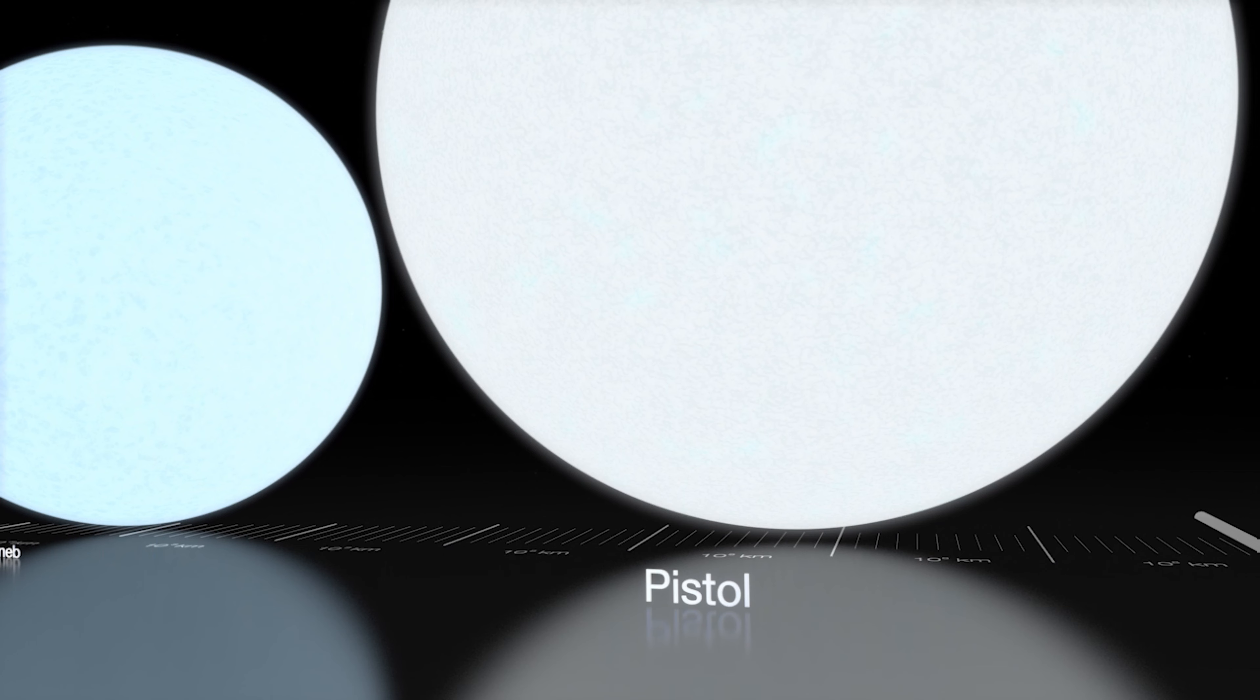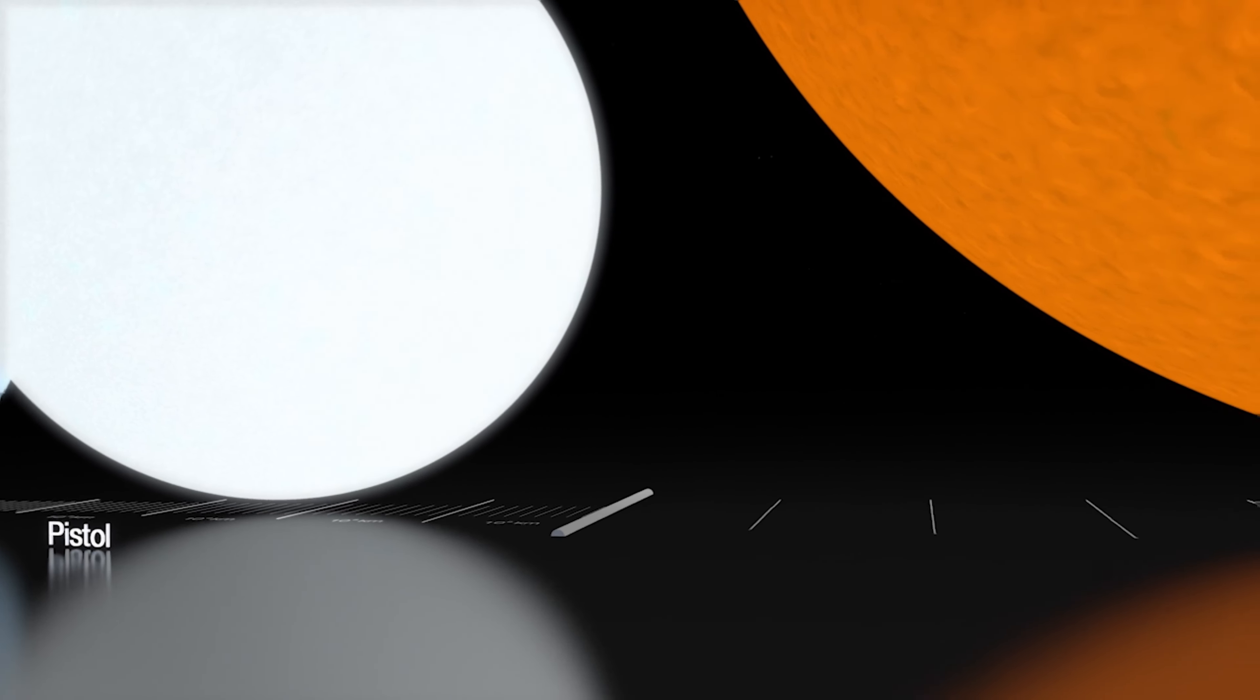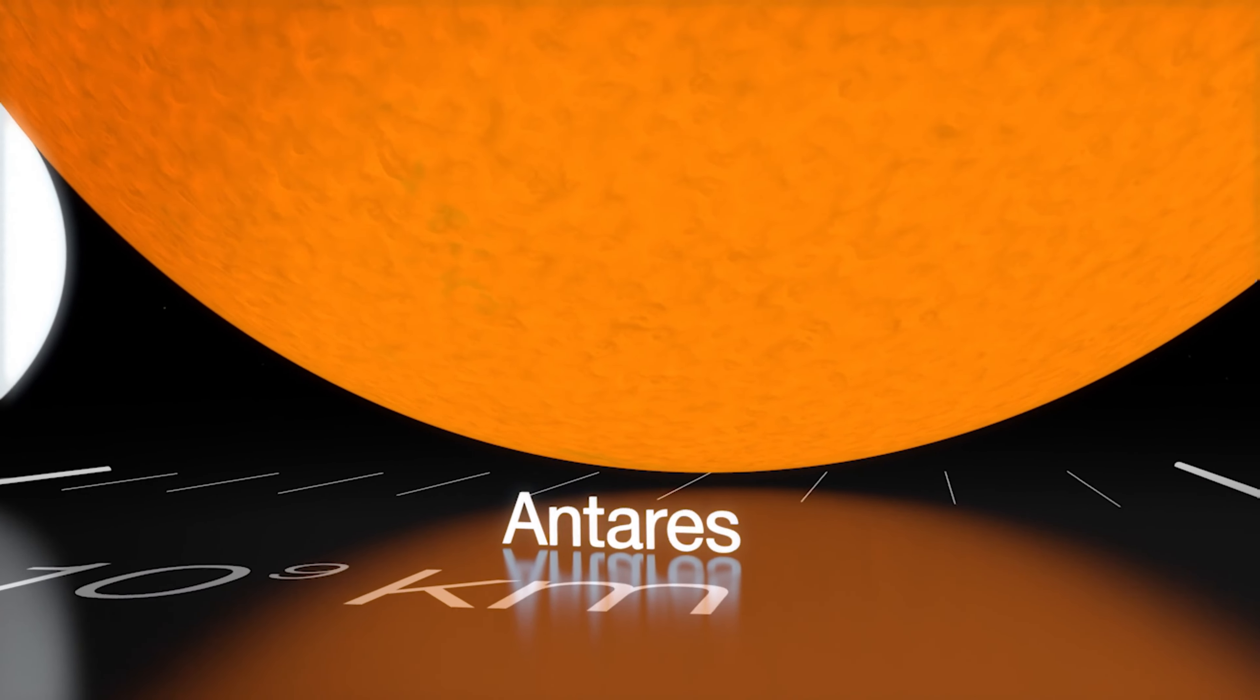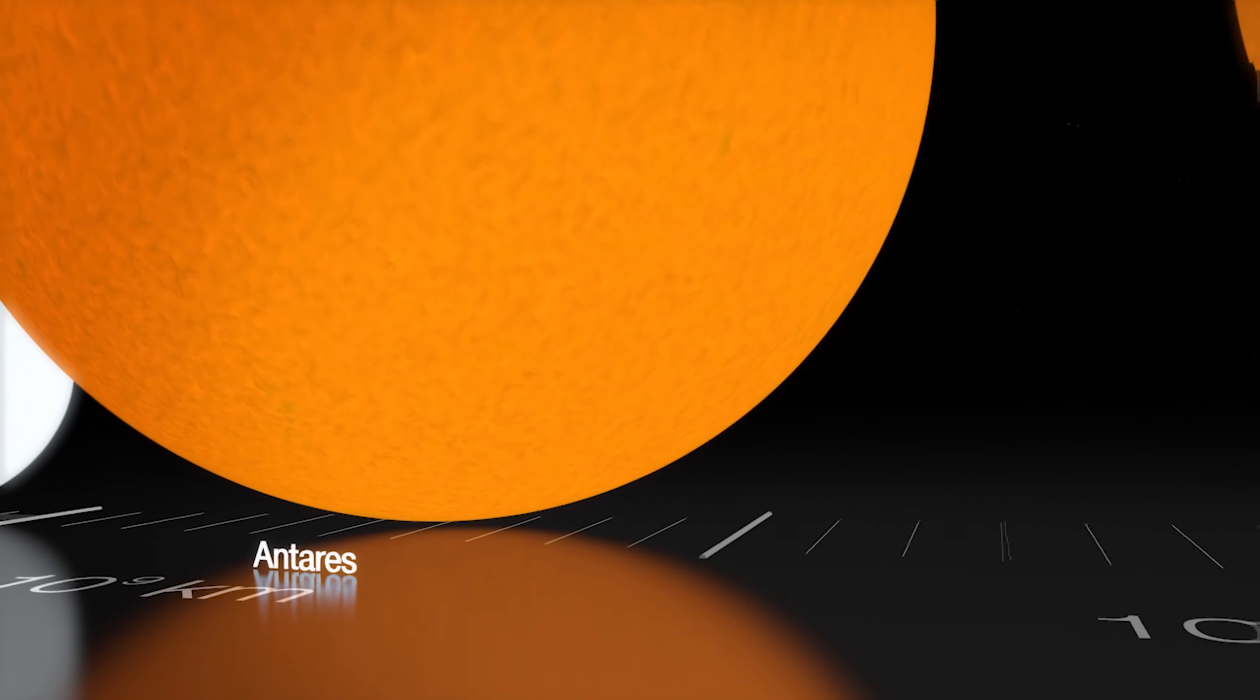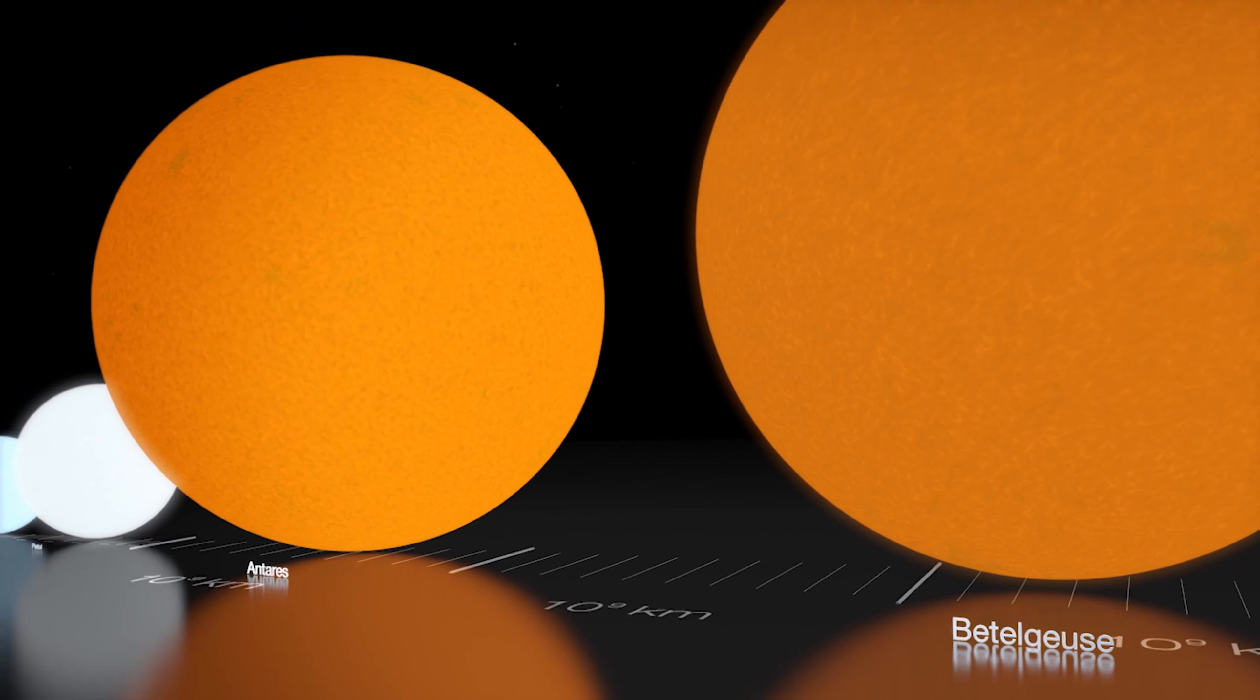Antares is the brightest star in the constellation of Scorpius. Its diameter is about 700 times larger than the Sun in visible light and 10,000 times the Sun's luminosity. Betelgeuse is usually the 10th brightest star in the night sky and, after Rigel, the second brightest in the constellation of Orion. Betelgeuse is a red supergiant star roughly 764 times as large as the Sun.